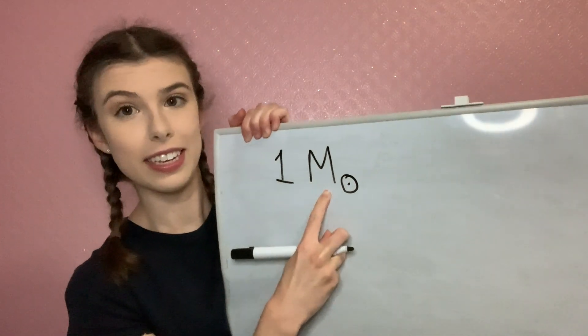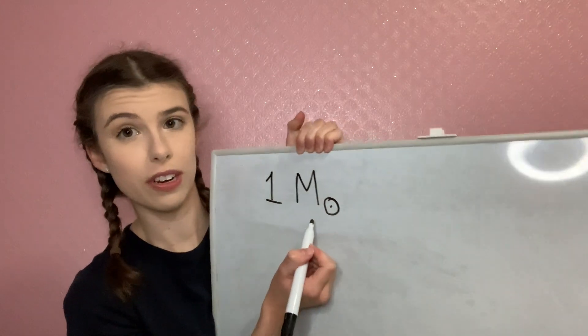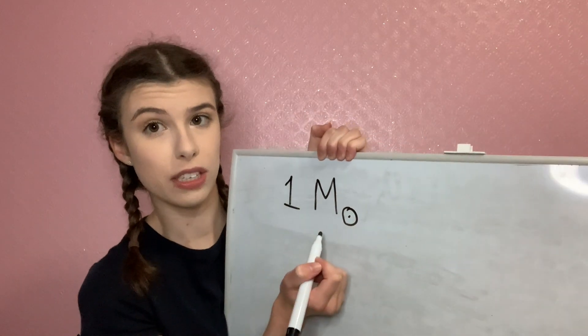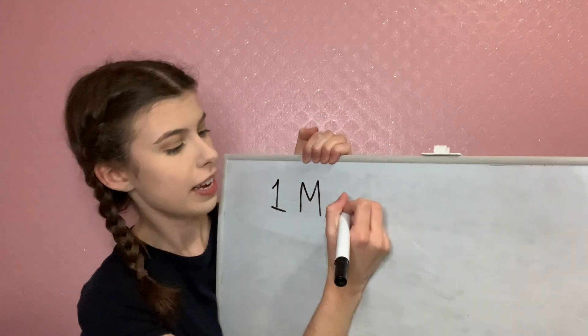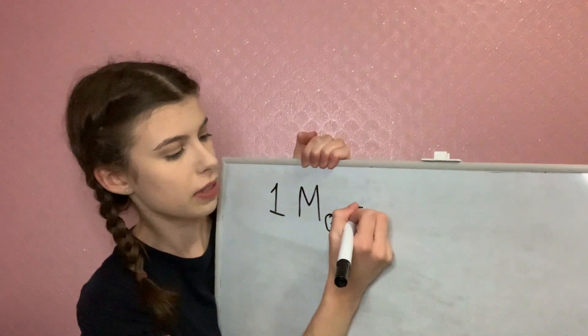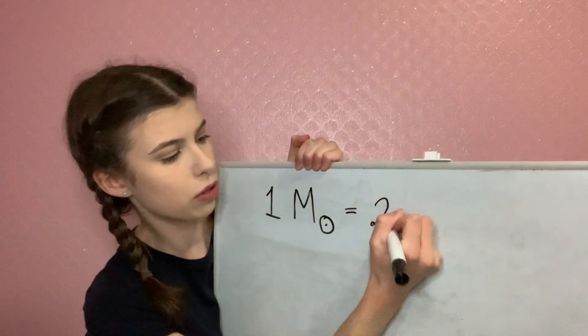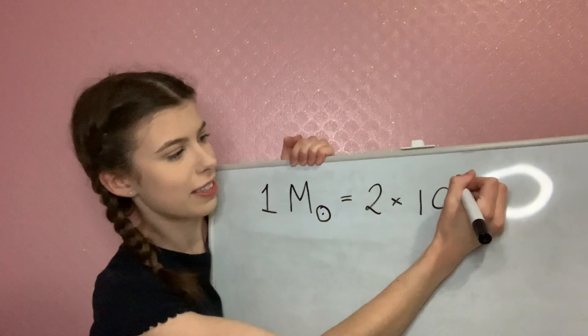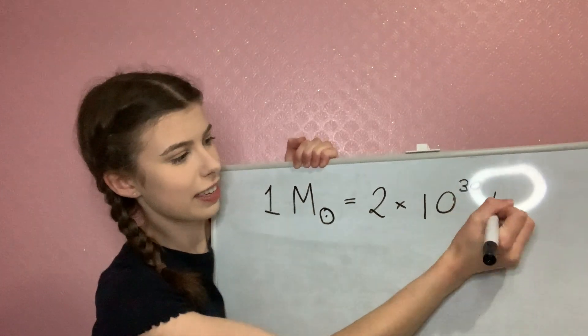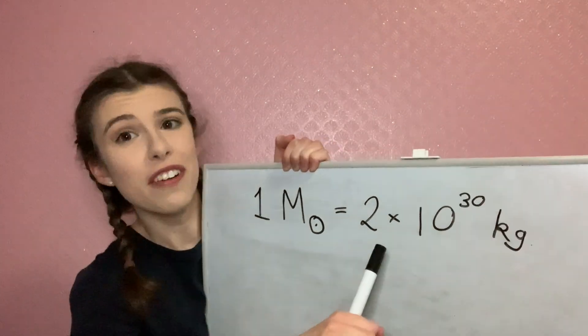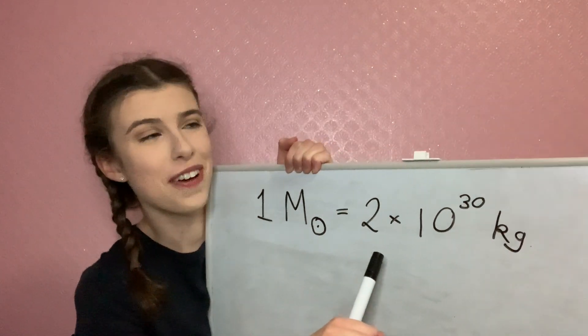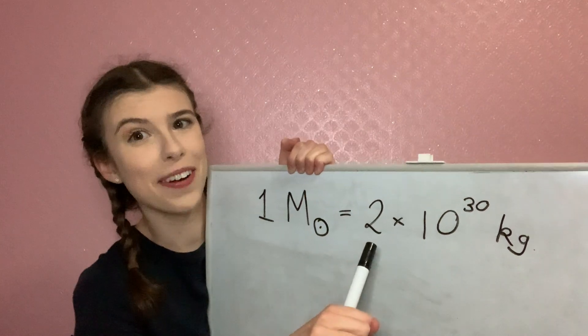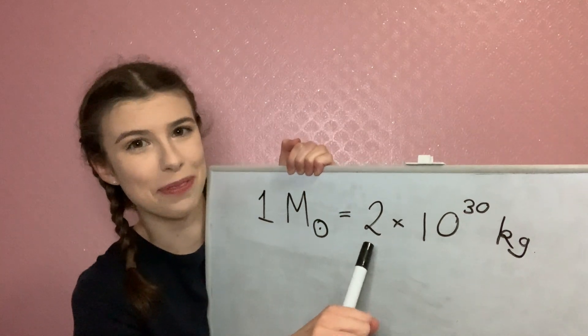One solar mass is the mass of our sun. In kilograms, this is about two times ten to the thirty kilograms — very, very massive.